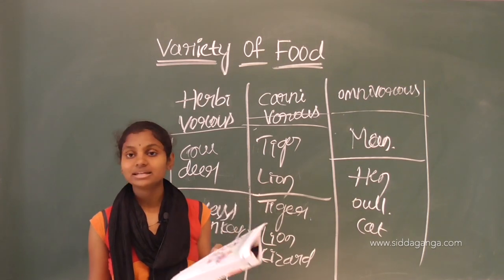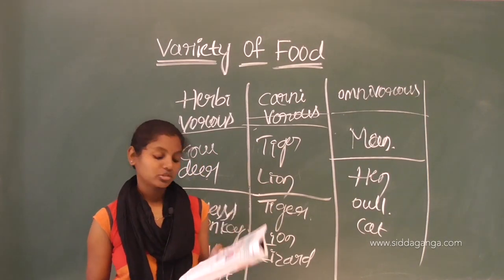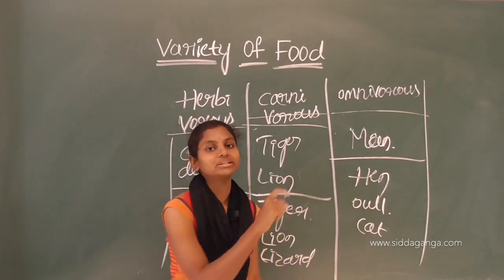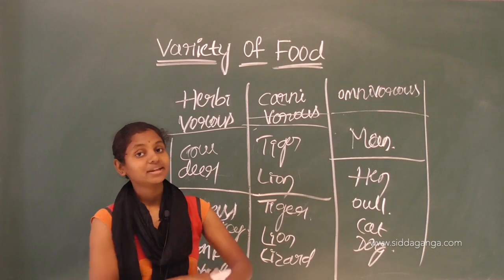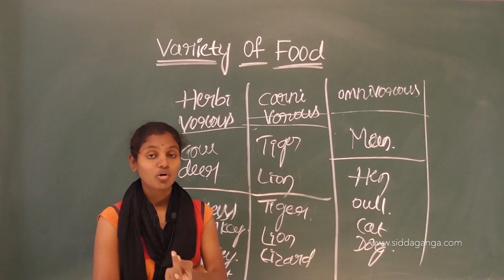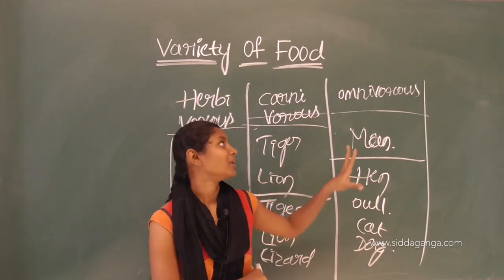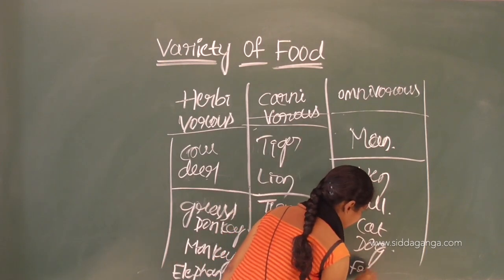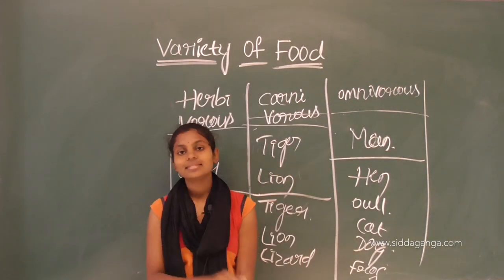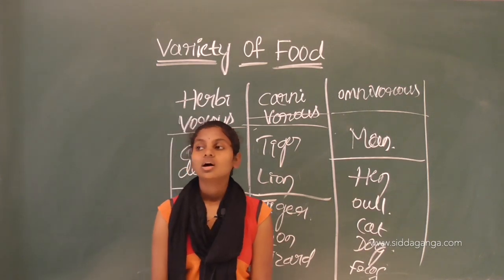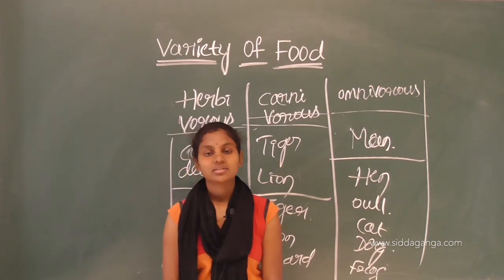Elephant is purely herbivorous — it is very large in size but it depends only on plant sources. Ox is herbivorous and depends purely on plant sources like grass. Cat is omnivorous — it can eat both plants and animal sources. Deer can eat only grass so it is herbivorous. Dog is omnivorous and can eat both plants and animal sources. Frog can eat small insects, worms, and also small plants, so it belongs to omnivores. This is your activity. Hope you understood this lesson. Please complete all the work given when your school opens, and show it to your teacher.